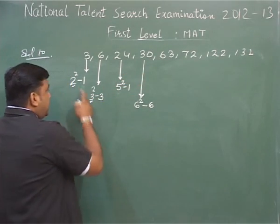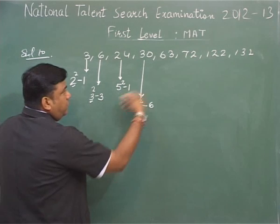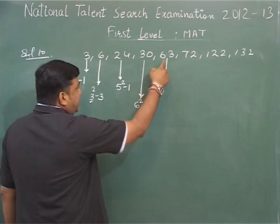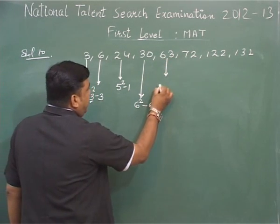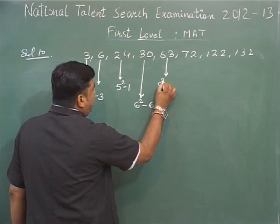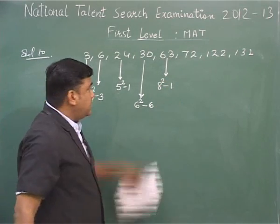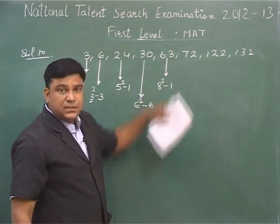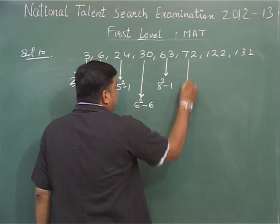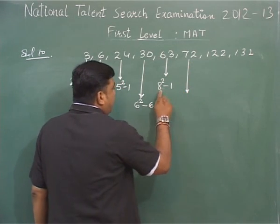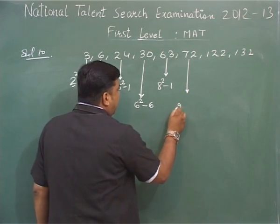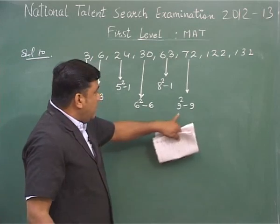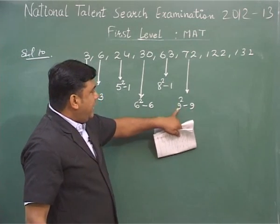Now this rule is followed by the other numbers. So by this, 8 squared minus 1: 64 minus 1 equals 63. The next step should be after 8, which is 9, and we subtract by itself.